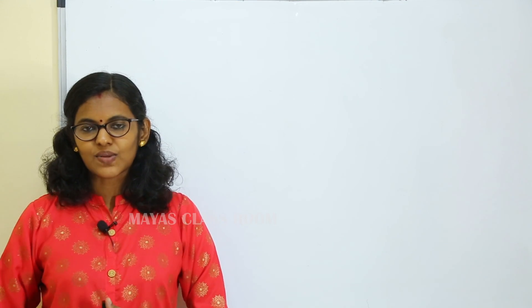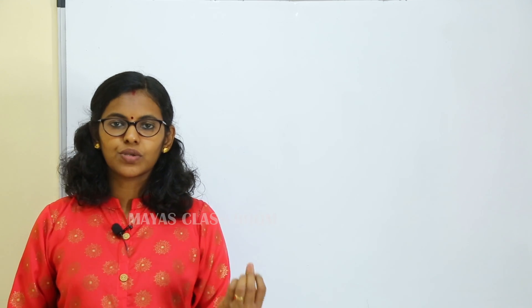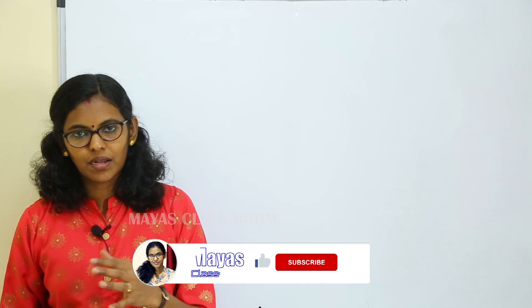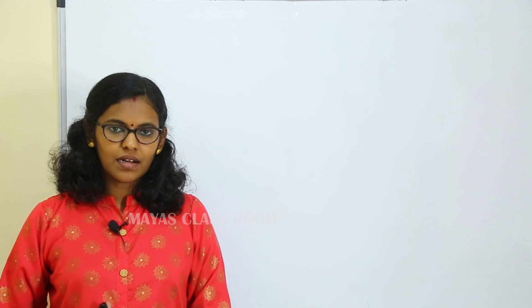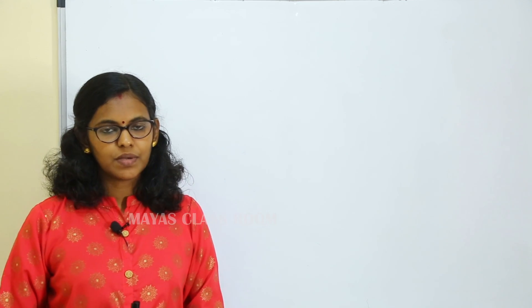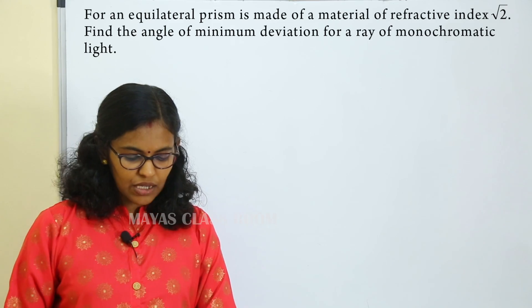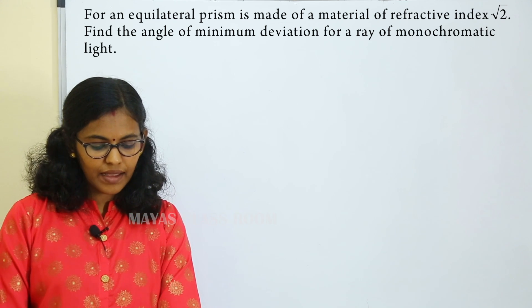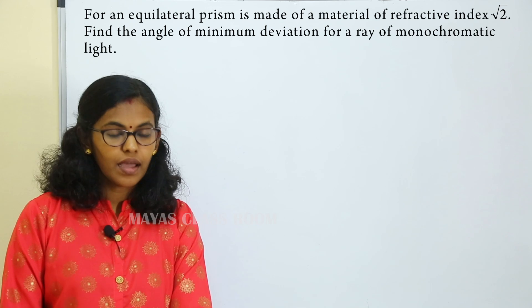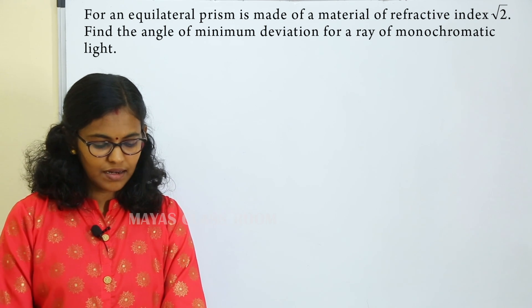Hello and welcome to this video. For an equilateral prism made of a metal of refractive index root 2, find the angle of minimum deviation for a ray of monochromatic light.